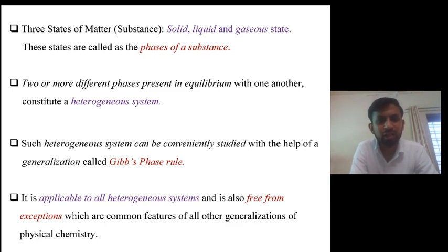Solid, liquid and gaseous states are called the phases of the substance. A heterogeneous system always constitutes when two or more different phases are present in equilibrium with one another, and such heterogeneous systems can be conveniently studied with the help of a generalization and that generalization we call Gibbs phase rule, which is applicable to all heterogeneous systems.